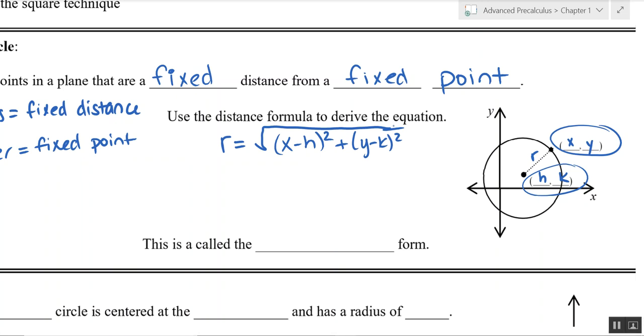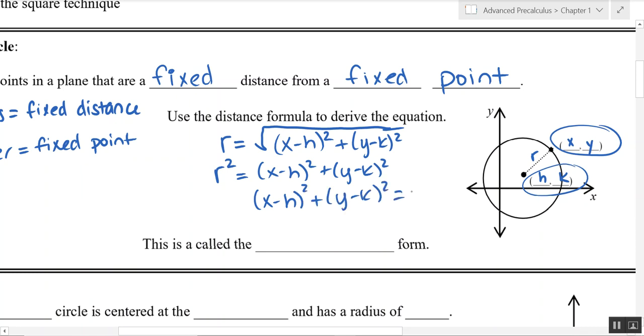I'm going to get rid of the square root by squaring both sides. We get R squared is equal to X minus H squared plus Y minus K squared. And this should look familiar, sometimes it's written where it's X minus H squared plus Y minus K squared is equal to R squared. I'm used to seeing it written that way. Remember H,K is the center of the circle and R is your radius. This is called standard form of the circle.